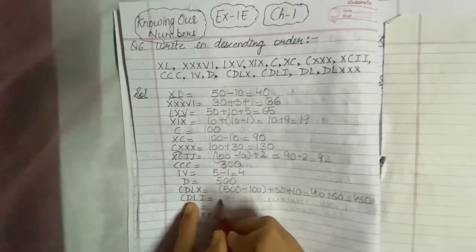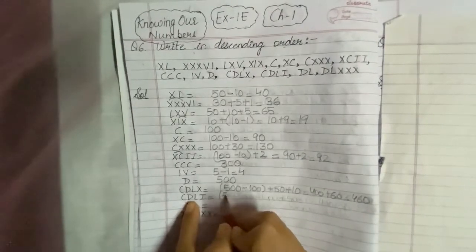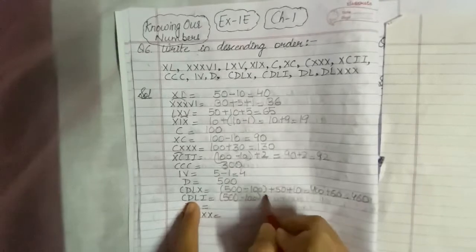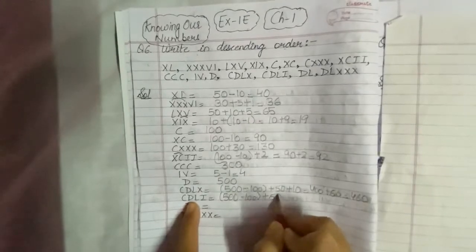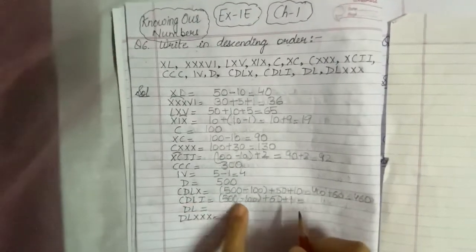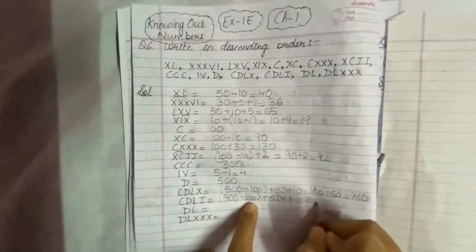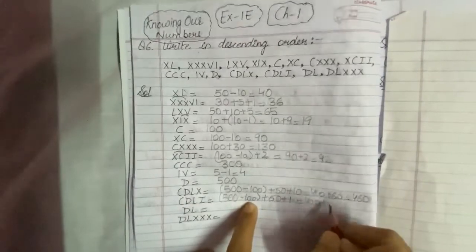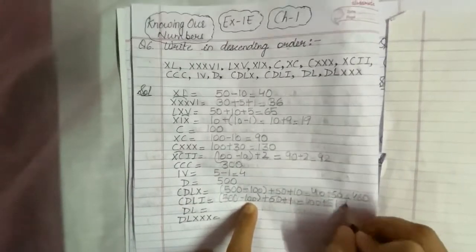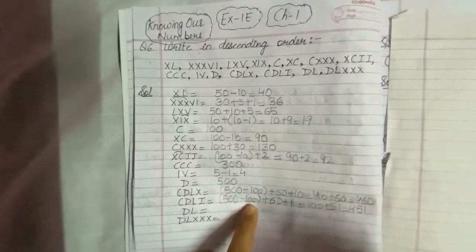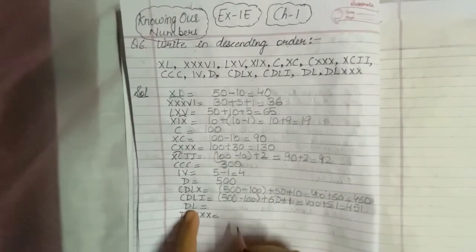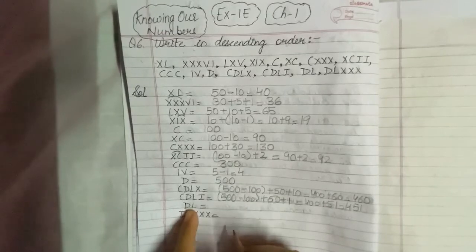Next is CDLI. CD again is 500 minus 100, which is 400. L means 50 and I means 1, so 50 plus 1 is 51. Therefore 400 plus 51 equals 451.